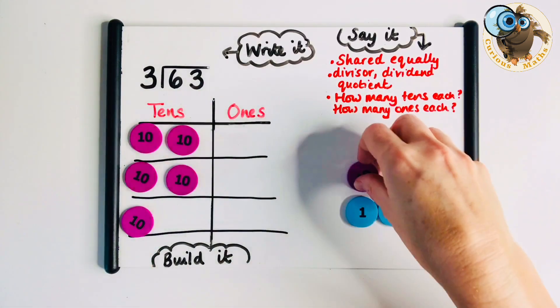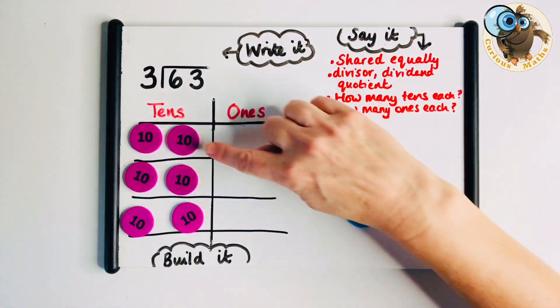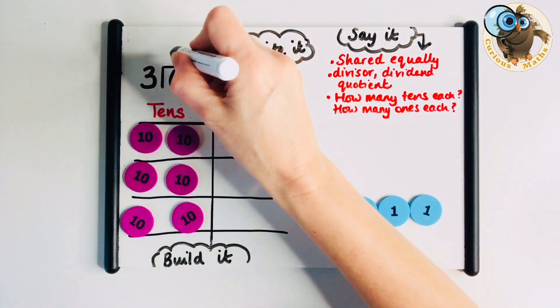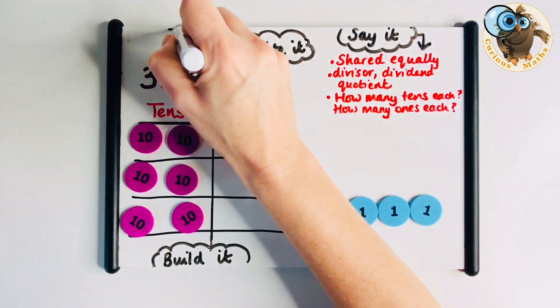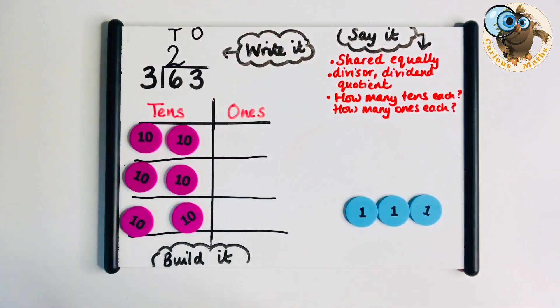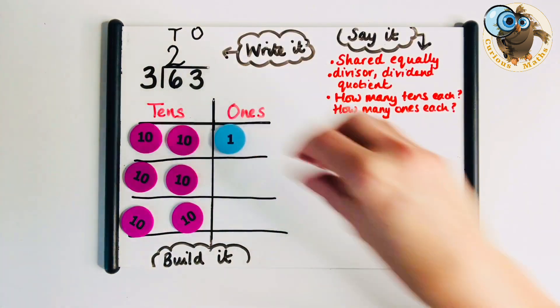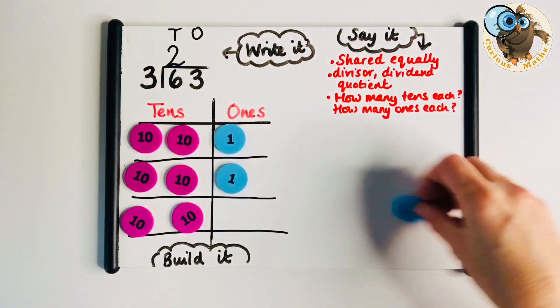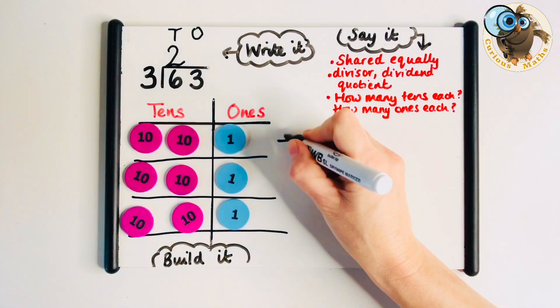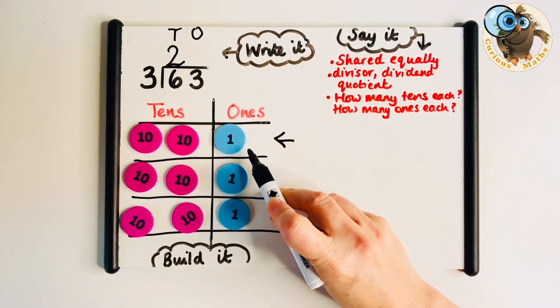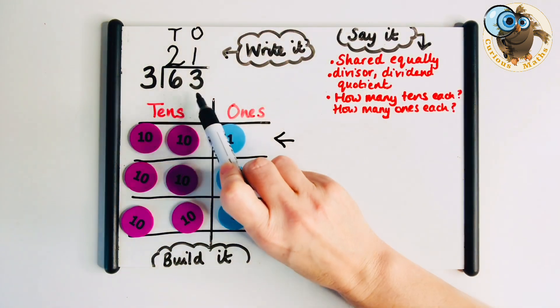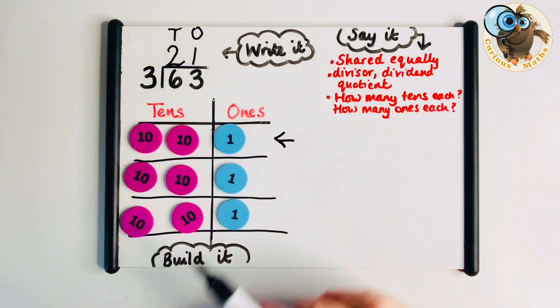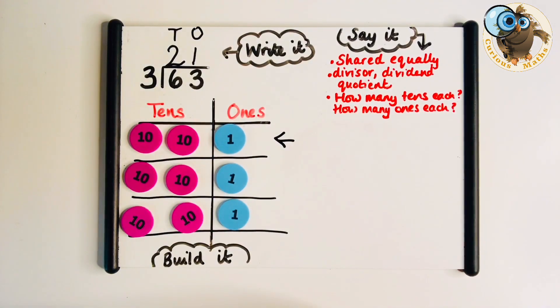Now I'm going to share those 10s equally between the 3. How many 10s have they got? Each person has got 2 tens. Now I'm going to share my 1s equally between 3. How many 1s has each person got? They have 1 one. So 63 shared equally between 3 people means they get 21 each. It's really quite straightforward and a really good visual.